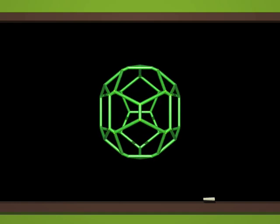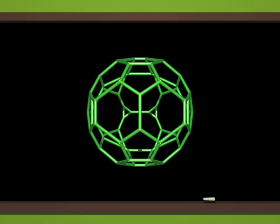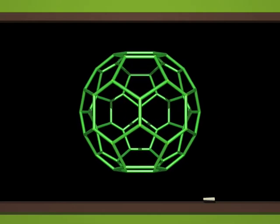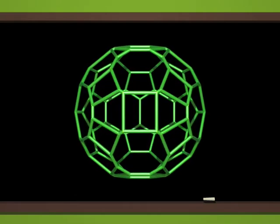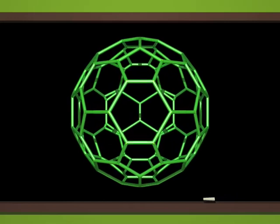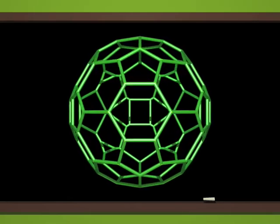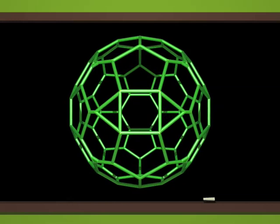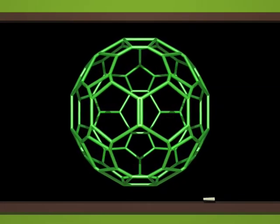I discovered the analogues of the icosahedron and the dodecahedron. They have complicated names, but I'll just call them 120-cell and 600-cell, since the former has 120 faces and the latter 600.